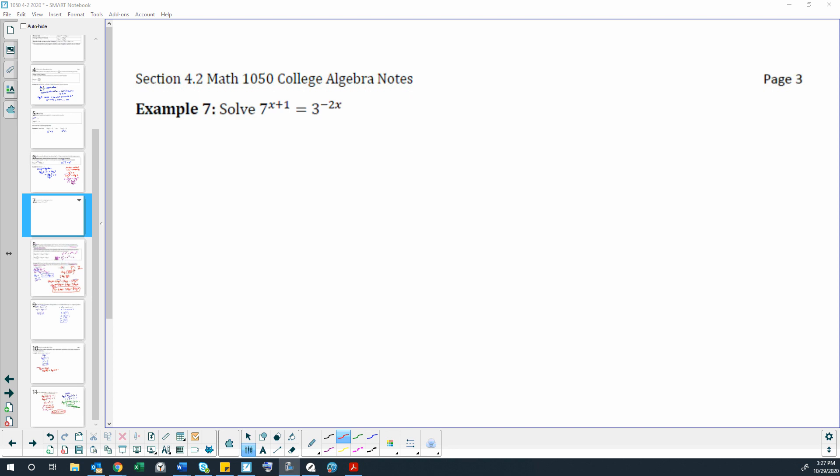Alright, example number seven. We are going to use the power property to help us solve this one along with the one-to-one property. So the one-to-one property, or the golden rule of algebra, says do to one side what you do to the other.